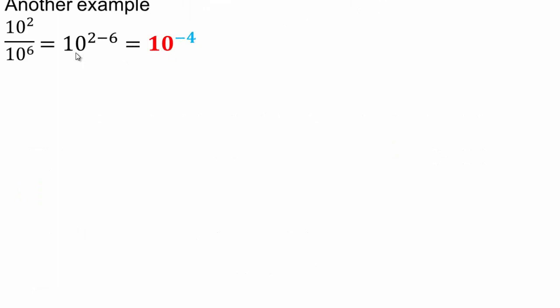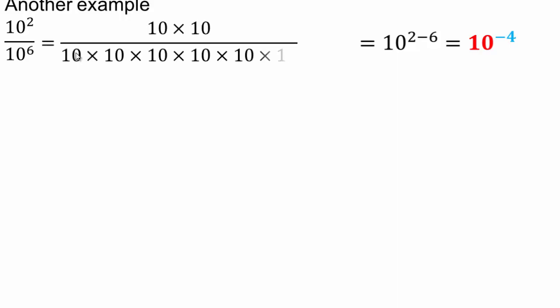Now let's look at 10 to the 2nd over 10 to the 6th, which gives us 10 to the negative 4. We haven't made sense of negative exponents yet. But let's see what 10 to the 2nd over 10 to the 6th looks like using equivalent fractions — dividing the 10s out leaves us with 1 over 10 to the 4. So negative exponents should be defined as: 10 to a negative 4 power equals 1 over 10 to the positive 4 power. Negative exponents give you reciprocals — reciprocal means 1 over.